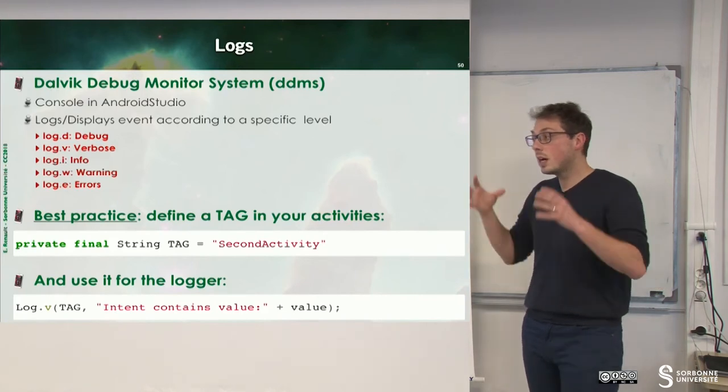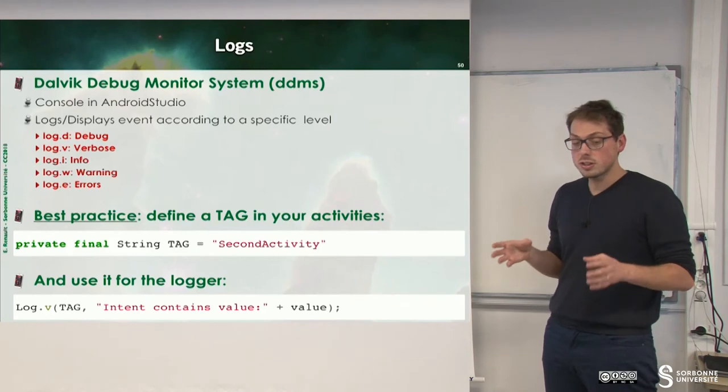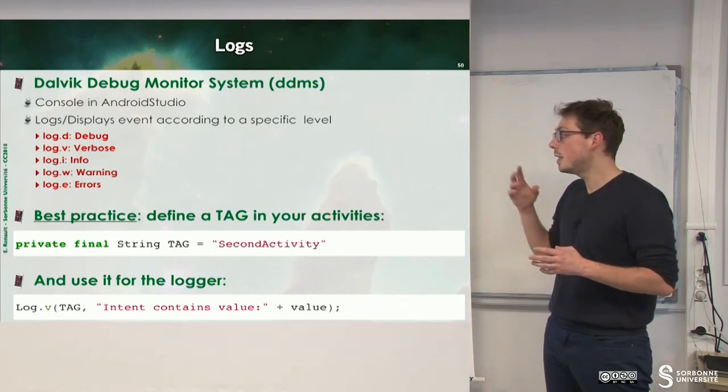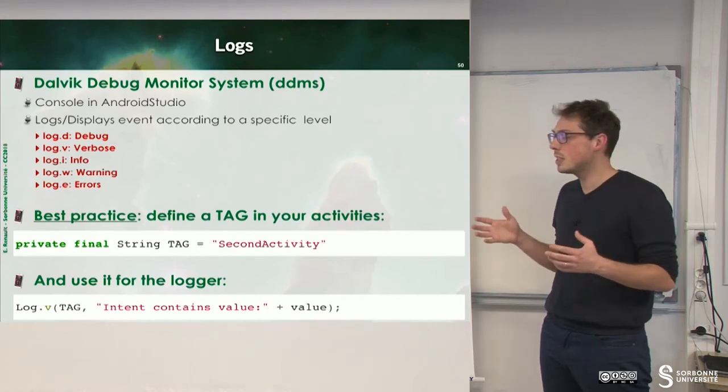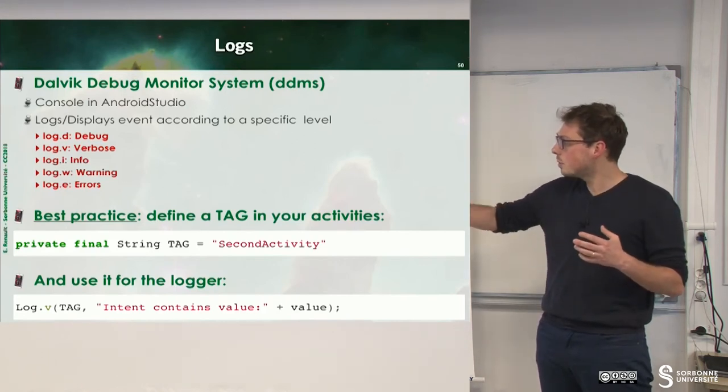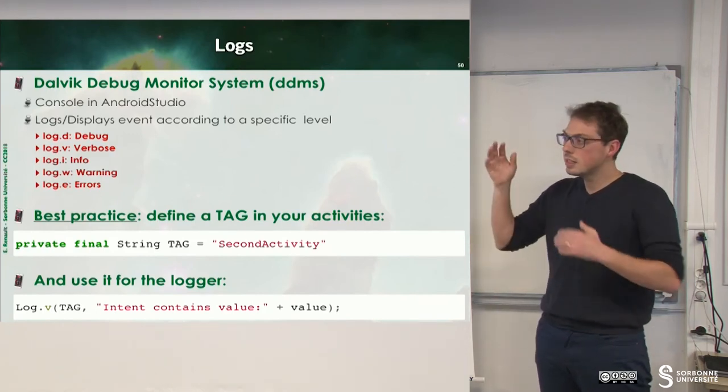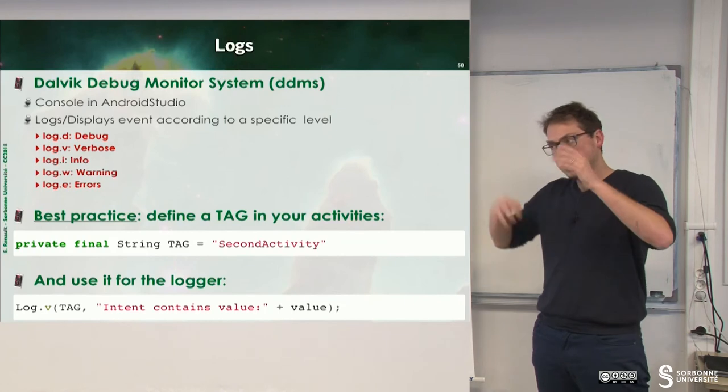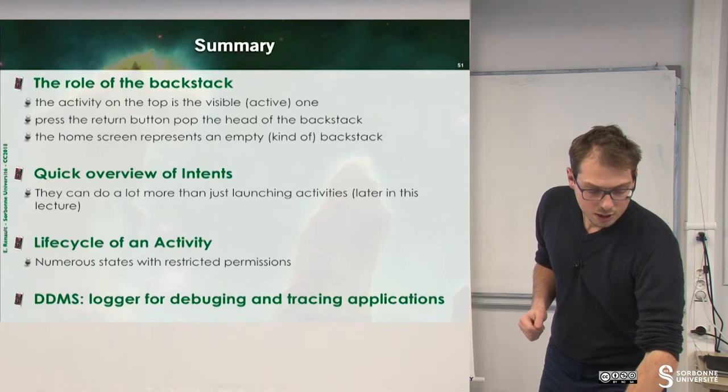The best practice, when you have some activity, is to define a tag. And this tag will be used in every log. So, when you are looking for a bug or something, you just have to write log.v tag something, and then, you can use logs to check where your bug is.